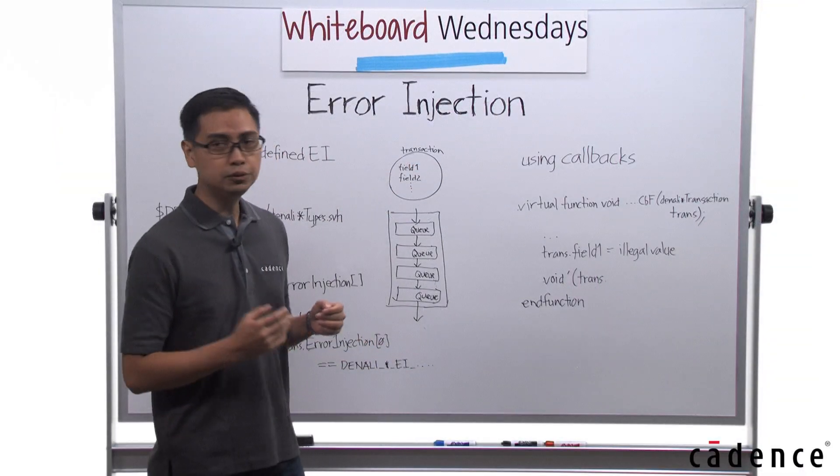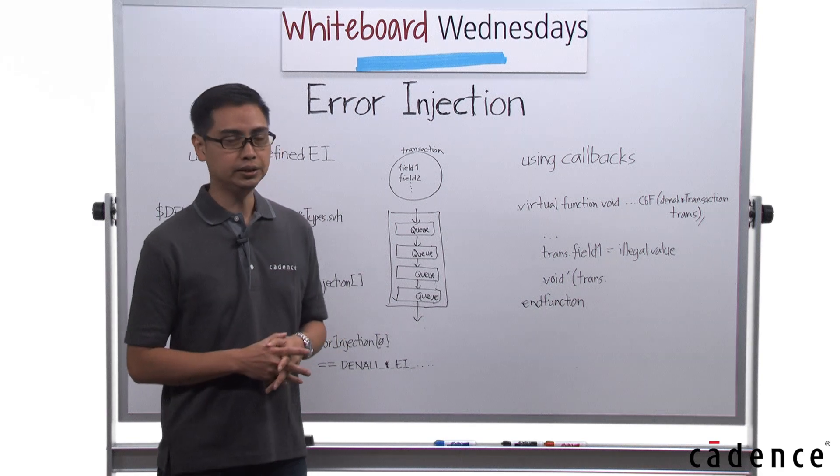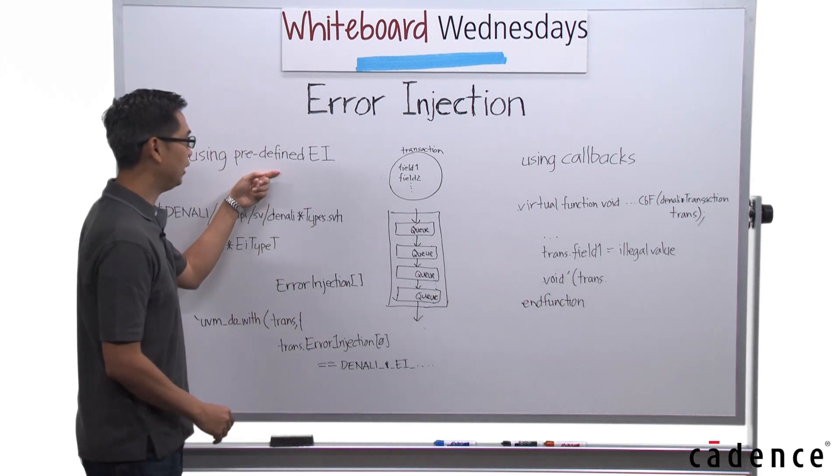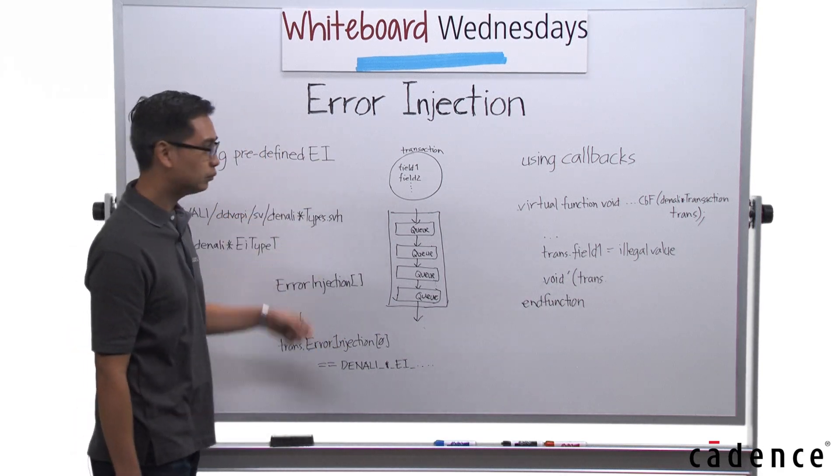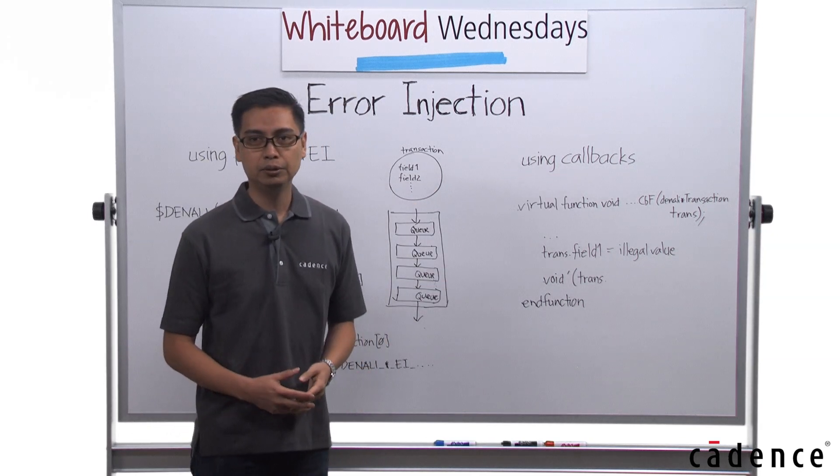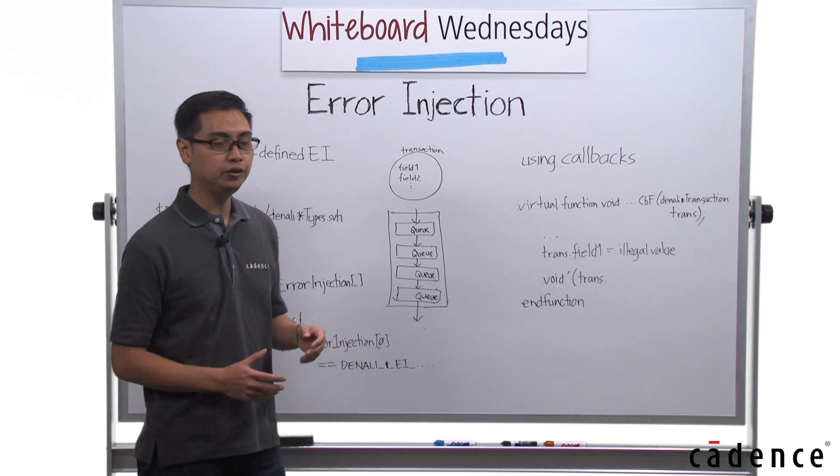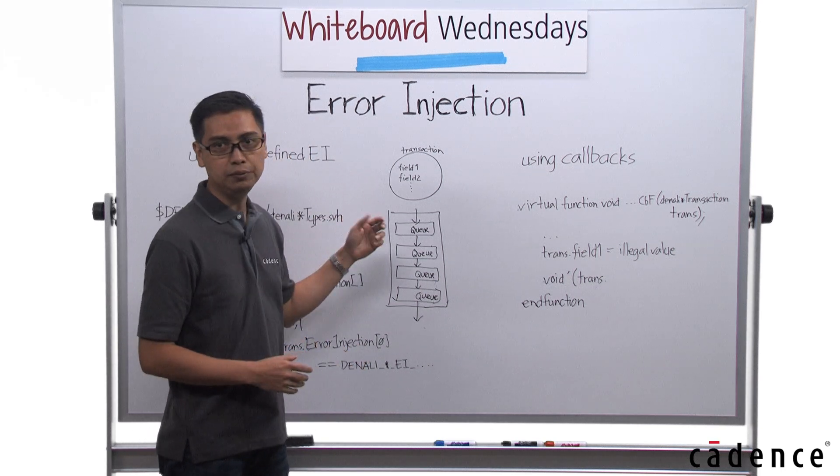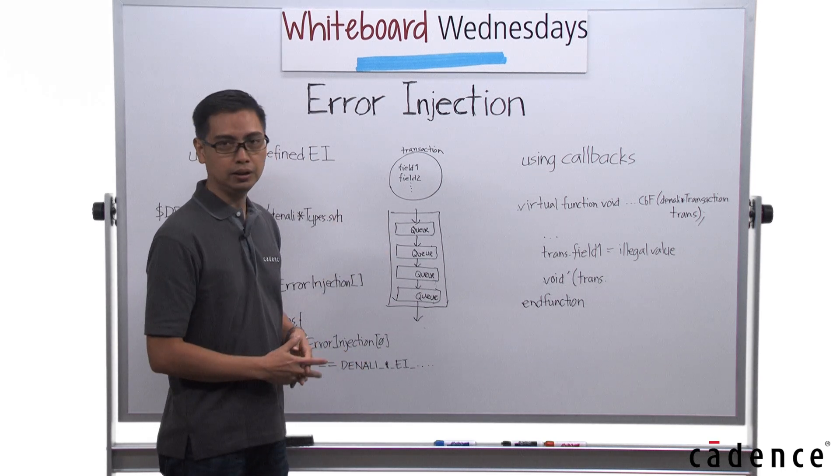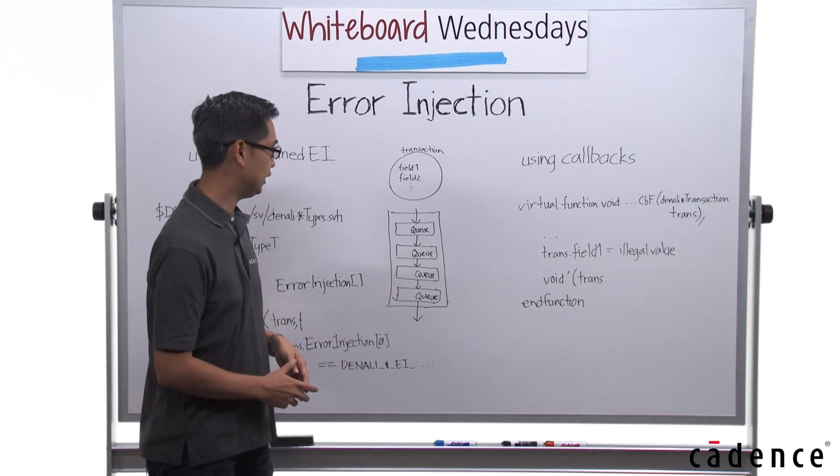So, there are two ways that you can do error injections: using predefined error injections or using callbacks. But before I go into further details, let me give you an overview of how the VIP goes through before it gets out and sent as a transaction.